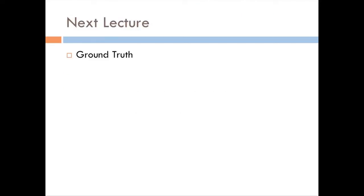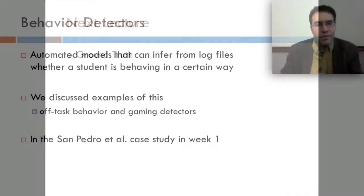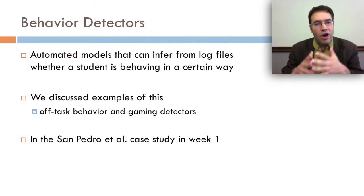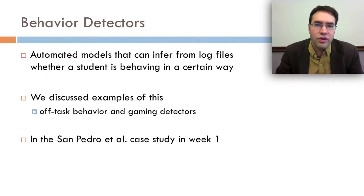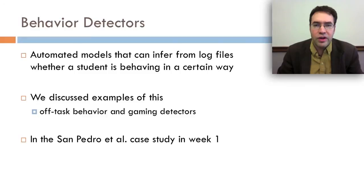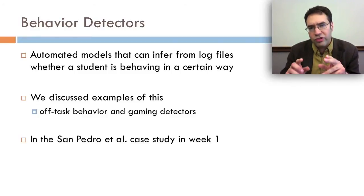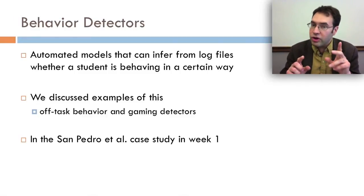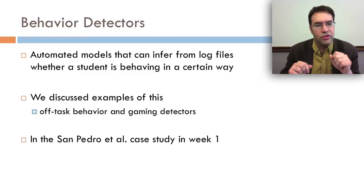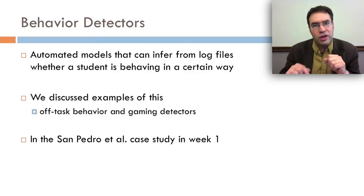In the next lecture we'll talk about ground truth for behavior detection. Behavior detectors are automated models that can infer from log files whether a student is behaving in a certain way. We've already discussed examples of this, including off-task behavior and gaming detectors, in the San Pedro et al. case study in week 1.